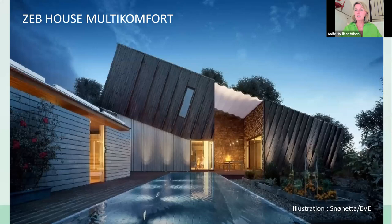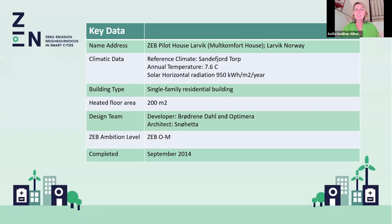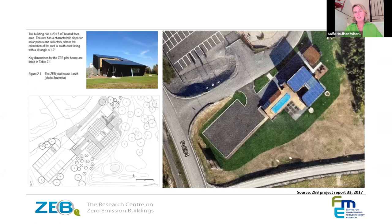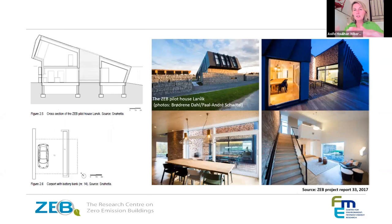The first pilot is ZEB Multi-Comfort, designed by Snøhetta Architects — who you may know from the Oslo Opera House. It's a single-family residence of 200 square meters that achieved a balance for both operational energy use and materials. Looking at passive design strategy, all buildings are orientated as much as possible to the south. In this case it's actually to the southeast, with a tilt angle optimized at about 19 degrees tilted to the south to maximize the photovoltaics on the roof.